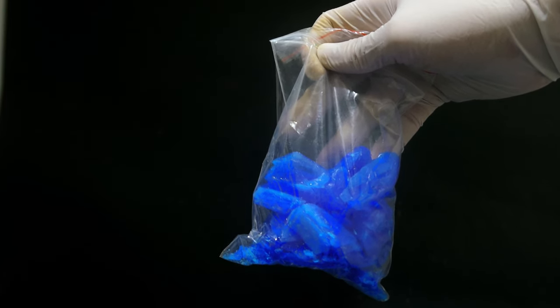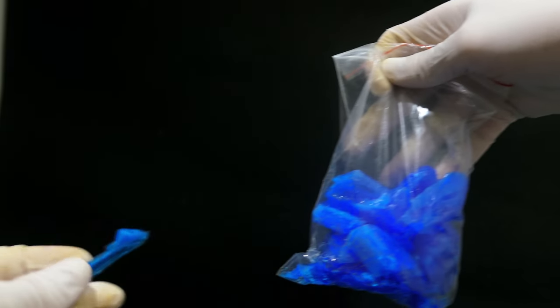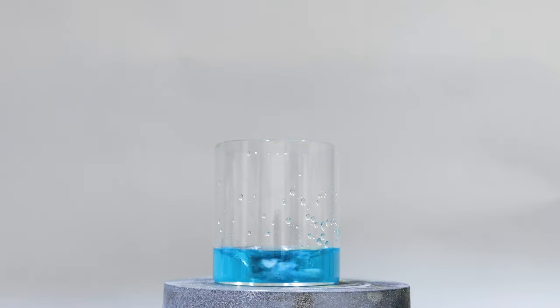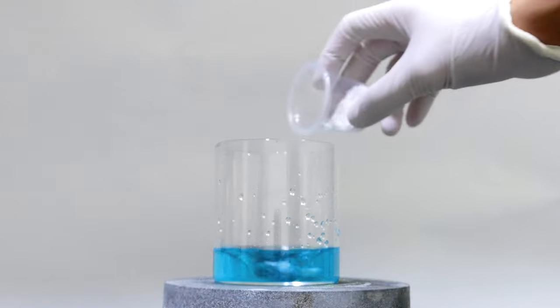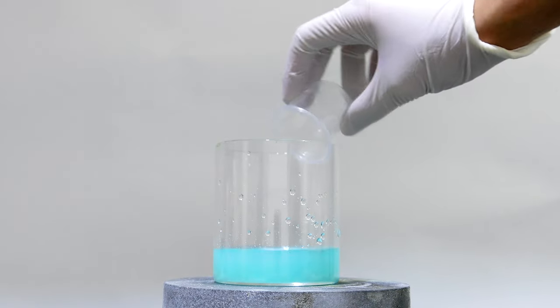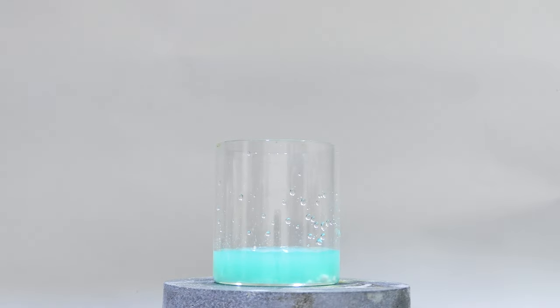First, 1 gram of crystalline copper sulfate pentahydrate is dissolved in about 50ml of water. Then 5 grams of potassium periodate is added. Immediately, the solution turns into light green, and light yellow precipitate starts to form.